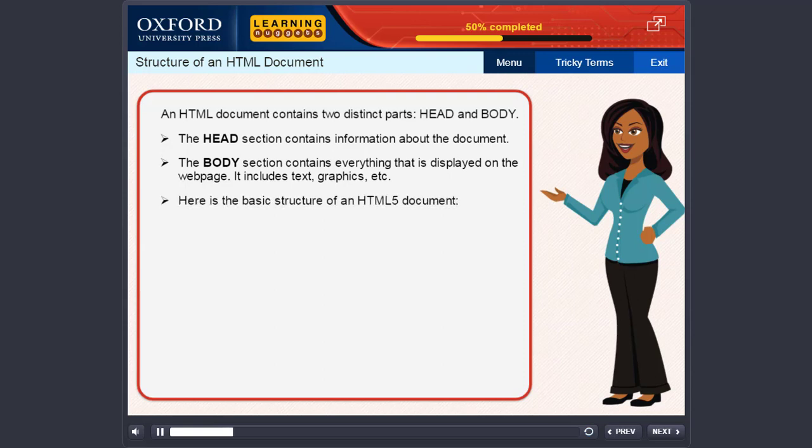Here is the basic structure of an HTML5 document. An HTML document starts with a doctype element followed by the HTML opening tag. Then, we have the header element within which the title and other information about the document is specified. Next comes the body element. And finally, the closing HTML tag.